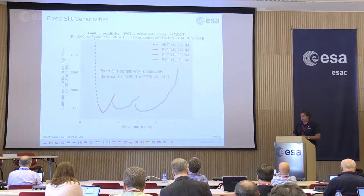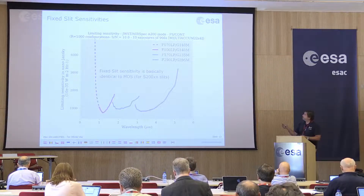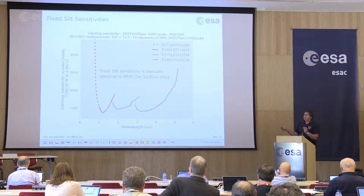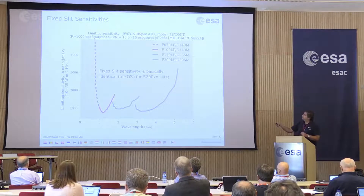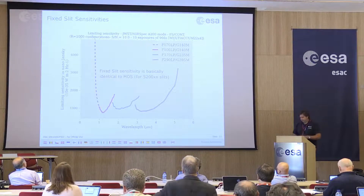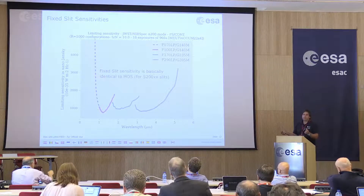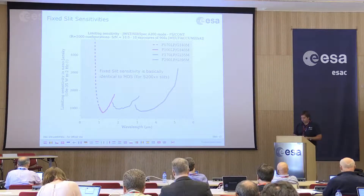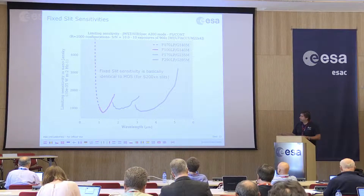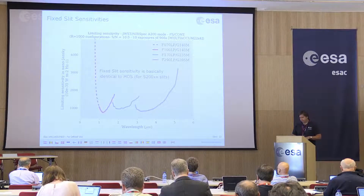For sensitivity, the sensitivities shown here are for roughly 10,000 seconds through one of the 200 milliarcsecond slits for continuum sources at medium resolution. It's basically the same as what was just shown for MOS — the slits are the same size, so to first order it's very similar. You go down to roughly one micro-Jansky per spectral pixel for the medium resolution gratings.